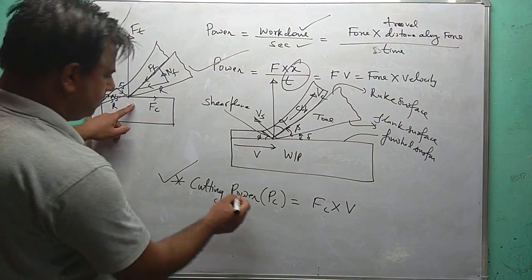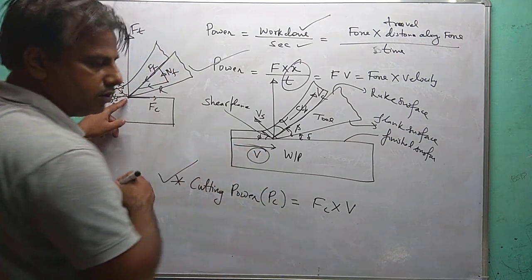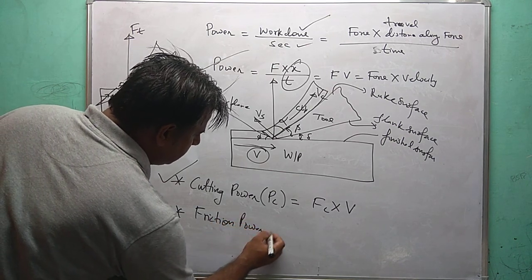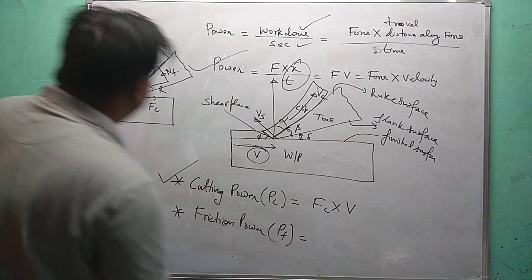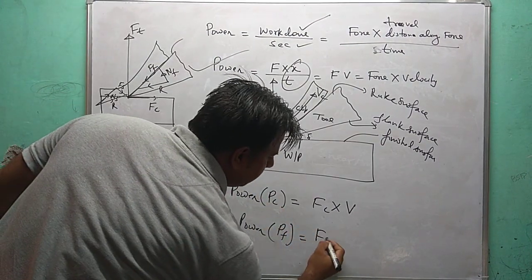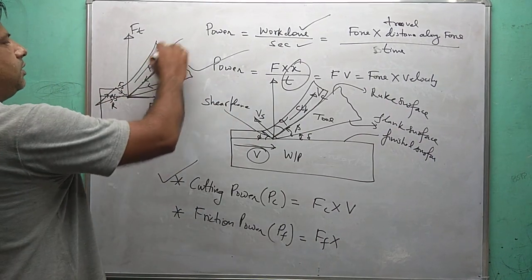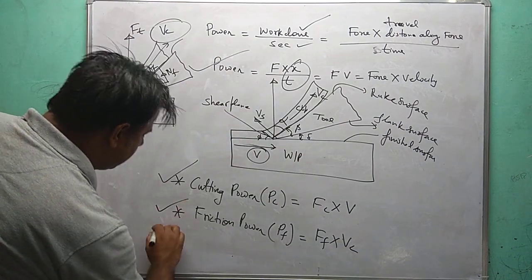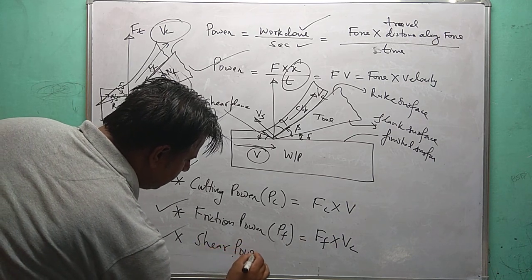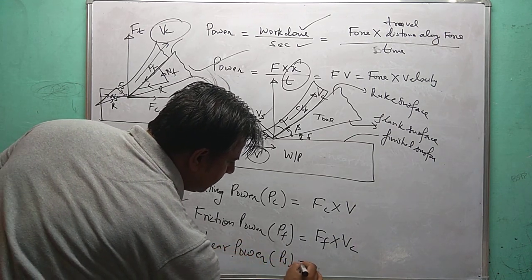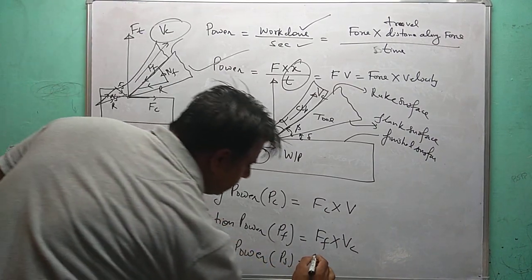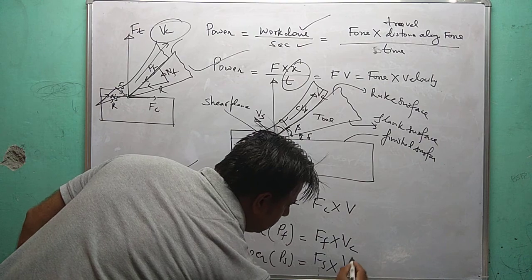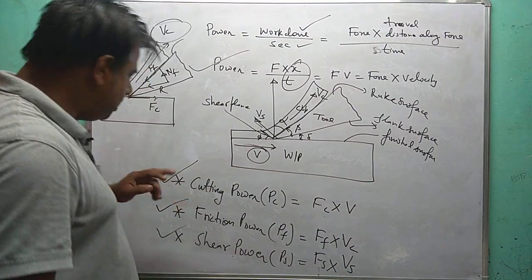Cutting power is equal to cutting force Fc multiplied by cutting velocity. Friction power is equal to friction force along the rake surface Ff into chip velocity along the rake surface Vc. Shear power is equal to the force along the shear plane Fs multiplied by shear velocity Vs.